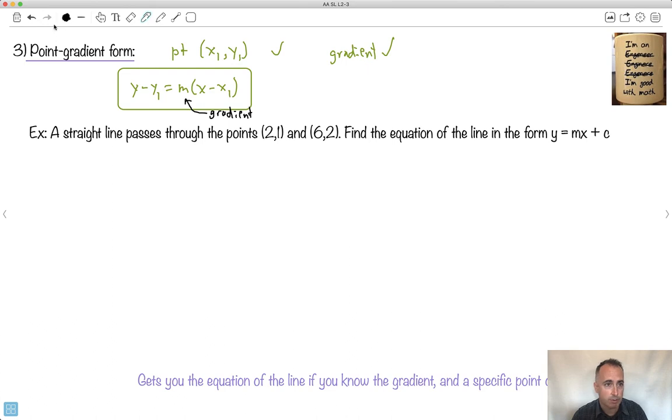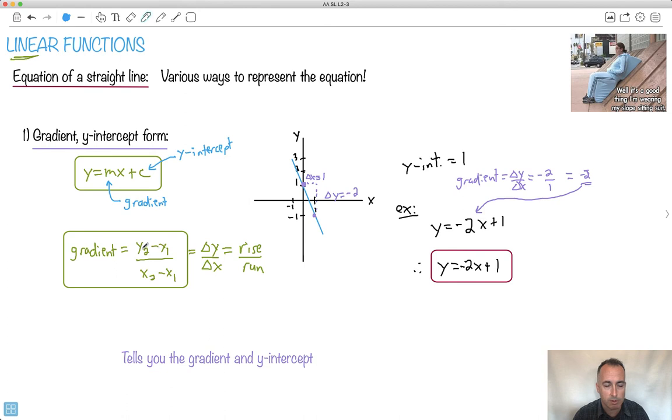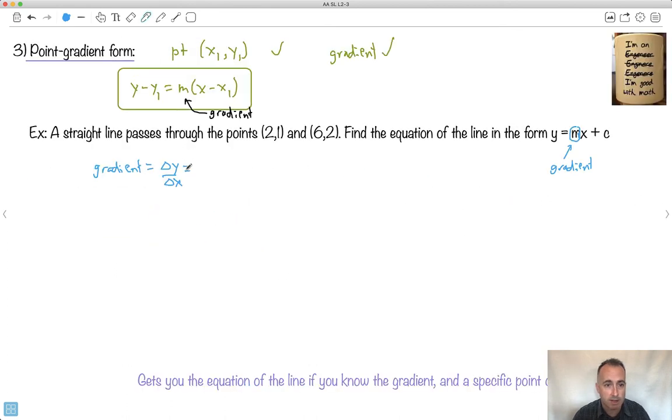I guess we first need to know the gradient. So the gradient will be equal to delta y over delta x. That's y2 minus y1 over x2 minus x1. Let me label them. This is x2, y2. This will be y1, x1. If I do y2 minus y1, it's 2 minus 1. And then if I do x2 minus x1, it's 6 minus 2. Well, what's 2 minus 1? It's just 1. 6 minus 2 is just 4. So my gradient then is 1 fourth. That's nice to know. Now I know my gradient. That is m.